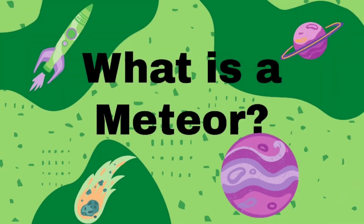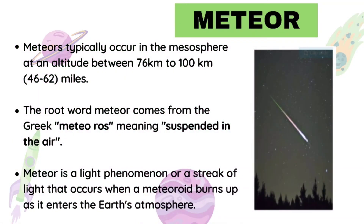Let's begin by answering the question: what is a meteor? Meteors typically occur in the mesosphere at an altitude between 76 km to 100 km, or 46 to 62 miles. The root word meteor comes from the Greek meteoros, meaning suspended in the air. A meteor is a light phenomenon — a streak of light that occurs when a meteoroid burns up as it enters the Earth's atmosphere.